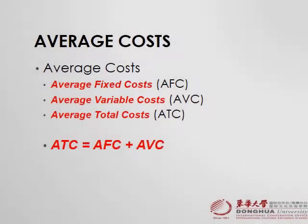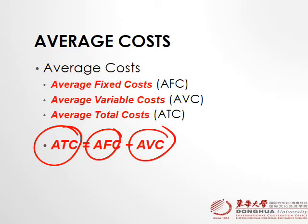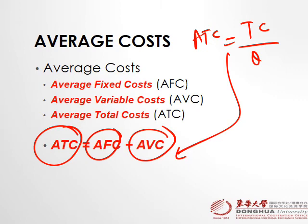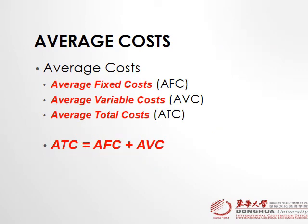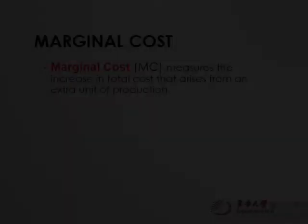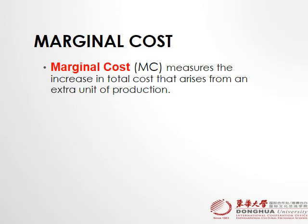We can also find average total cost by adding average fixed cost and average variable cost. So there are two formulas for average total cost: one is total cost divided by quantity, and the other is average fixed cost plus average variable cost.